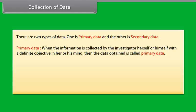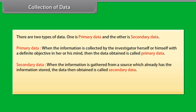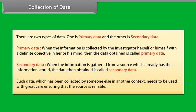Collection of data: There are two types of data. One is primary data and the other is secondary data. Primary data is when the information is collected by the investigator herself or himself with a definite objective in mind. Secondary data is when the information is gathered from a source which already has the information stored. Such data needs to be used with great care ensuring that the source is reliable.